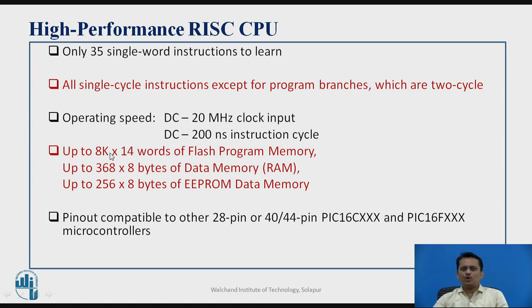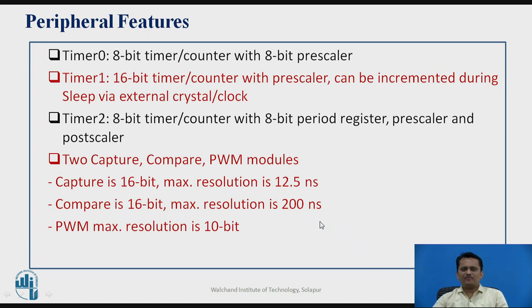The microcontroller has three types of memory. Flash program memory has 8K locations, each storing 14-bit data. Data memory (RAM) is 368 bytes, divided into four banks. There is also EEPROM data memory of 256×8. This IC is compatible with 28-pin, 40-pin, or 44-pin PIC microcontroller series.